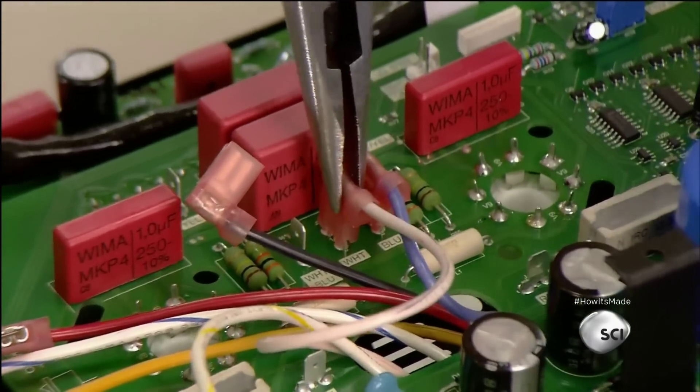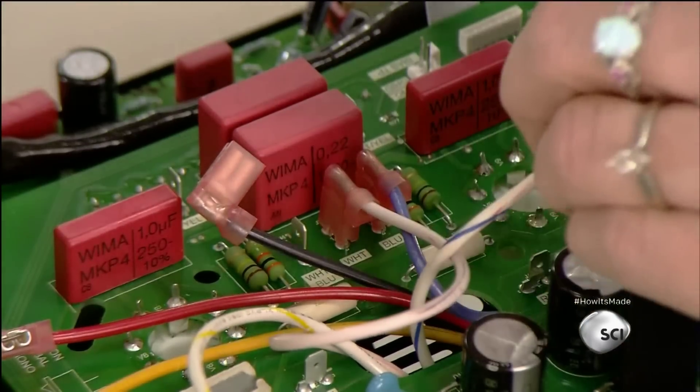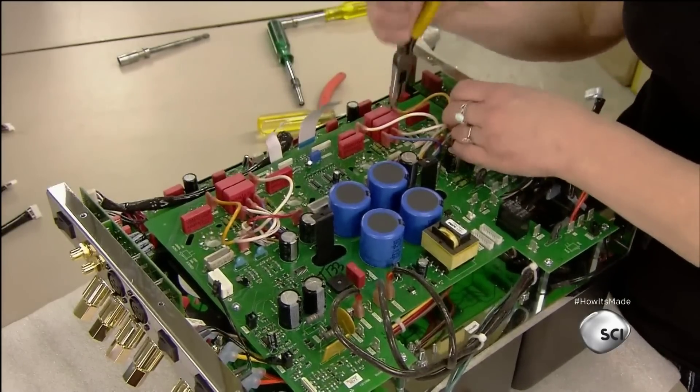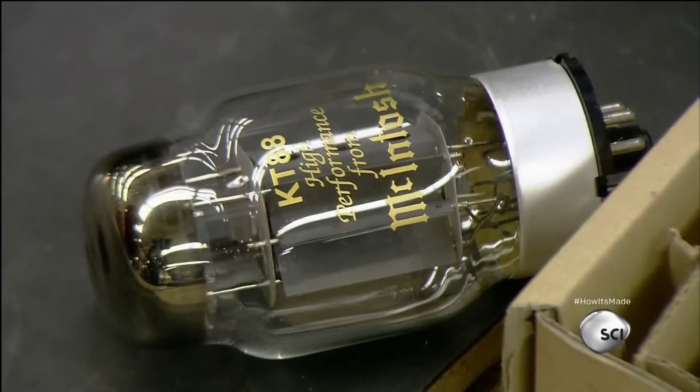Then they connect the transformer leads. They plug the vacuum tubes, one by one, into the sockets.